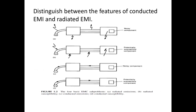Let's see the features of conducted EMI and radiated EMI and also distinguish between them. There are four basic EMC — that is, electromagnetic compatibility — problem categories: A. Radiated emission, B. Radiated susceptibility, C. Conducted emissions, D. Conducted susceptibility.